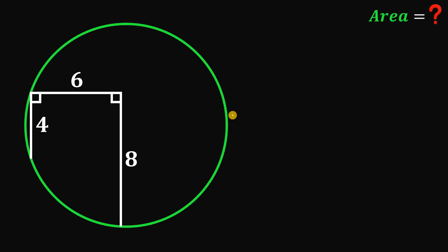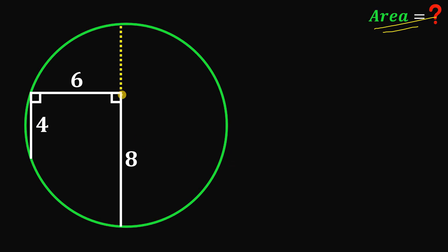Given this figure, our goal is to find the area of this circle. What we're going to do first is to extend the segment that measures eight units. Note that this chord is not the diameter — it is not given that this eight-unit segment passes through the center of the circle.